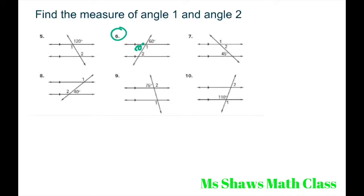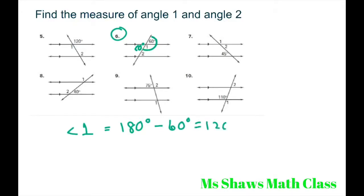For number 6 – I know that this intersecting lines part right here is 60, but we really didn't need to know that. We just need to know that these two angles are supplementary. So for angle 1, that's going to be 180 degrees minus 60 degrees, which equals 120 degrees. And angle 2 is going to go back to 60, because you could use the alternate interior angle theorem.